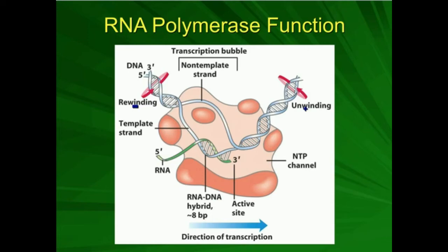We're going to talk a lot about transcription, which is basically the first step if we want to express a gene. To express a gene, we take the DNA, which is the storage form of the genetic information, and synthesize a transient carrier called mRNA. The mRNA goes to the ribosome in the cytosol and carries the information for making proteins in terms of the order of amino acids to polymerize.